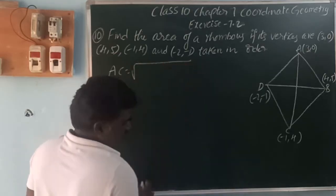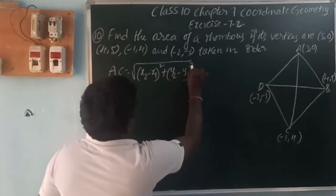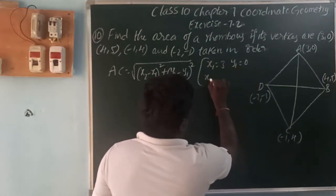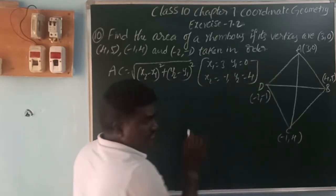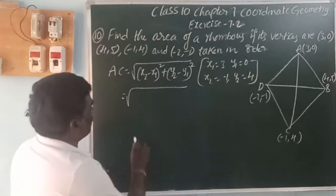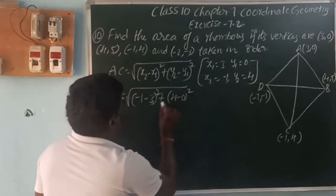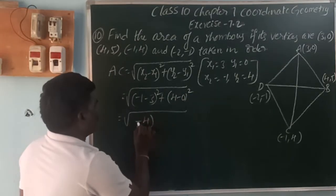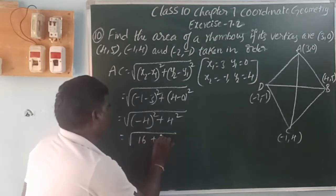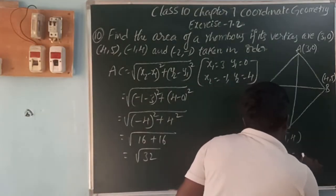The distance formula is: square root of (x₂ - x₁)² + (y₂ - y₁)². For diagonal AC: x₁=3, y₁=0, x₂=-1, y₂=4. So AC = √((-1-3)² + (4-0)²) = √((-4)² + 4²) = √(16 + 16) = √32. The diagonal length AC is √32.